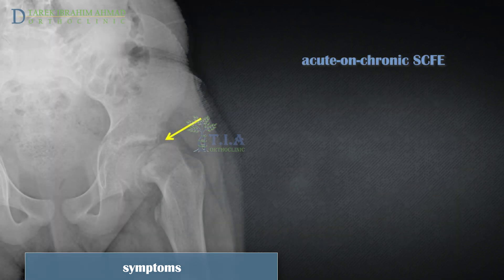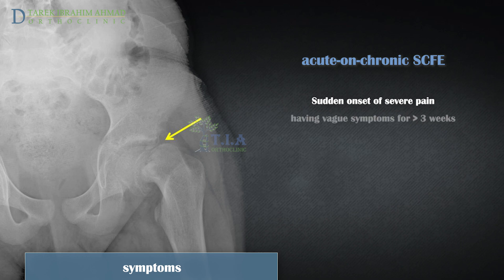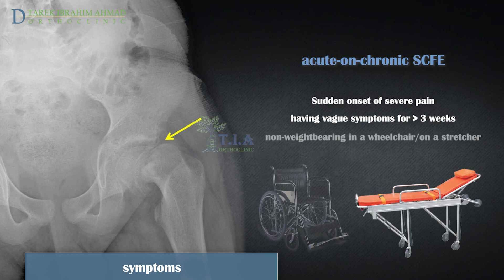Acute on chronic slips: this presentation occurs when a patient with a history of symptoms and signs of chronic slips — such as limp and/or pain of at least three weeks duration — presents with an acute increase in pain and loss of motion of the affected hip. The patient should be made non-weight-bearing as for children with acute slips.